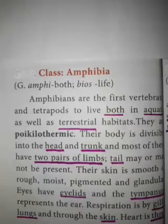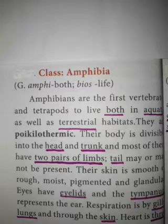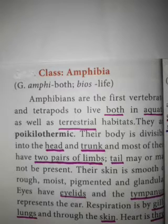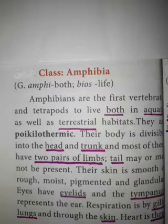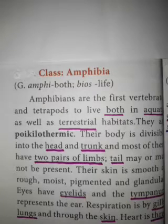Hi students, we studied that subphylum vertebrata is divided into two divisions: agnatha and gnathostomata. Under agnatha we have only one class, cyclostomata. Gnathostomata includes the pisces and tetrapods. Pisces includes the classes osteichthyes and chondrichthyes. Tetrapods includes the classes amphibia, reptiles, aves and mammals. In this video we are going to learn about amphibians and reptiles.